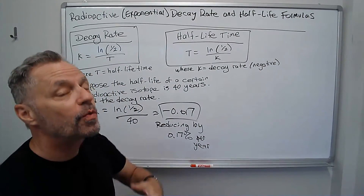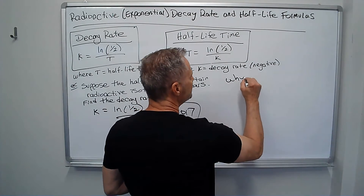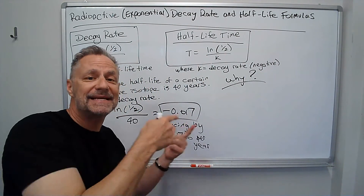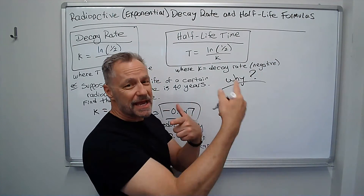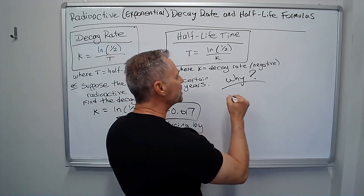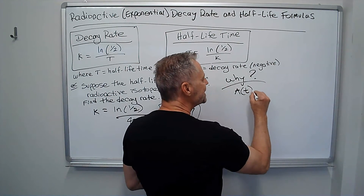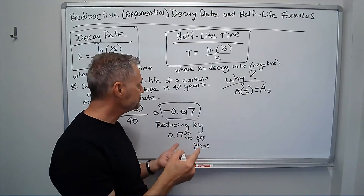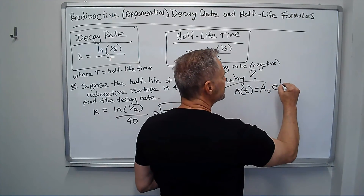I'll show you why that's the case in case you're curious. Why is that the case? Well, I can use my exponential growth or decay formula. Let's use it as: the amount at time t equals the amount I start with — the amount at time 0, a-sub-0 — times e to the kt.